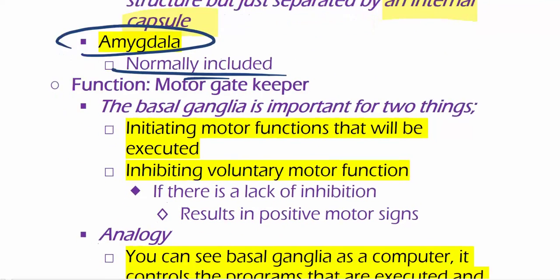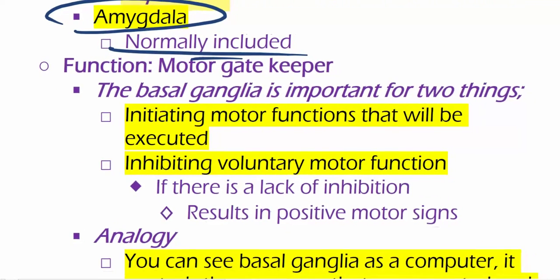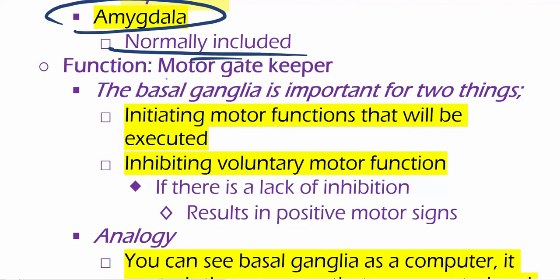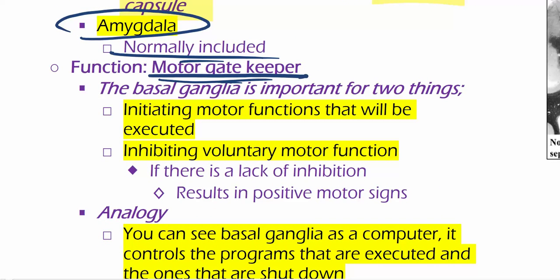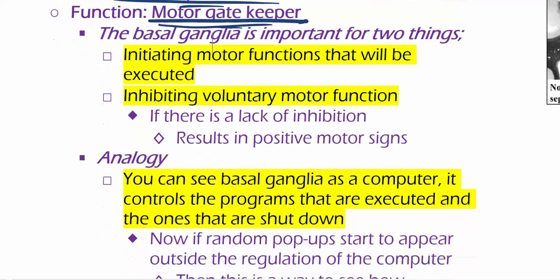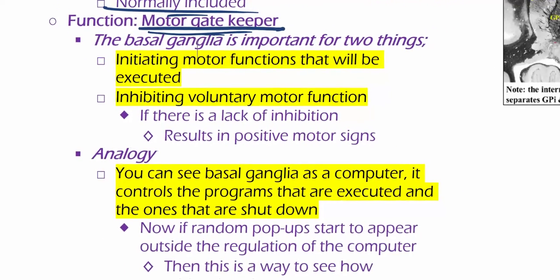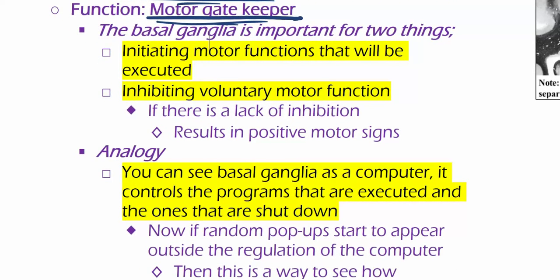What is the basal ganglia doing? So the basal ganglia is a motor gatekeeper. If you need somebody to keep your keys to your car, give it to your basal ganglia. But anyhow, that's just a joke. So the basal ganglia is the motor gatekeeper, and it's going to be important for doing two things.